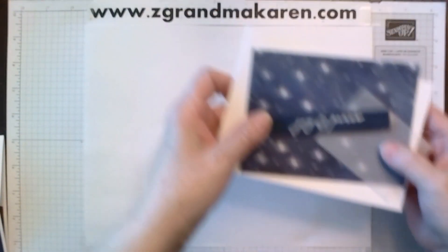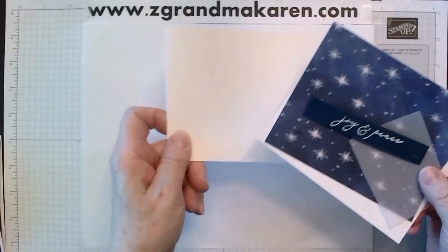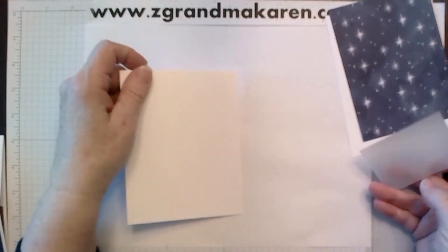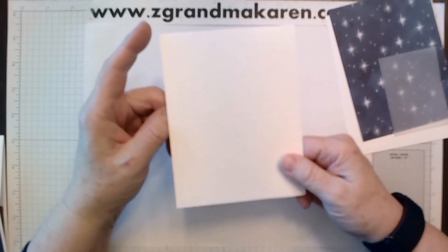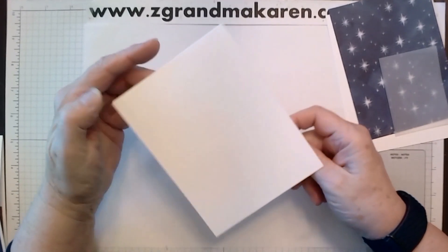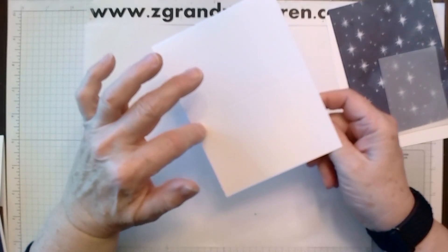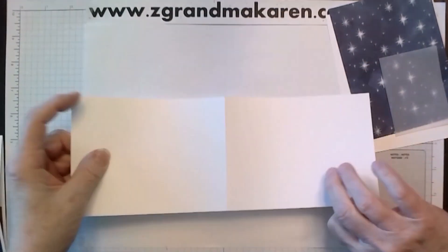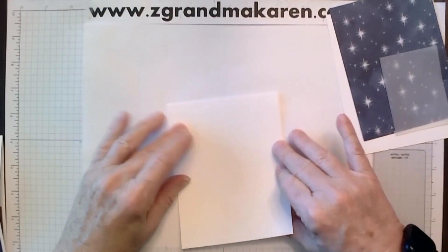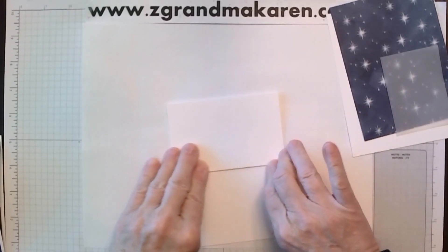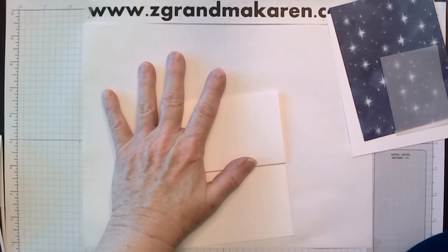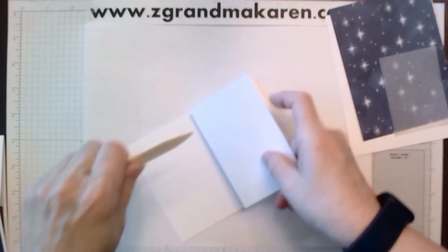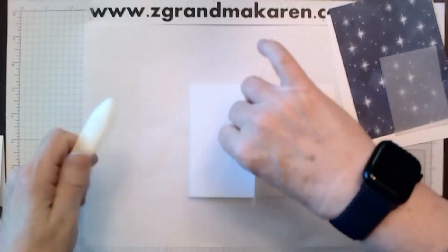So what we need first is, and I'll put all the dimensions, a piece of four and a quarter by eleven. And it's scored at two and three quarters and five and a half. So we will fold that in half and fold it up. And burnish it, because I'm using the thick cardstock. And then just give it a little burnish.